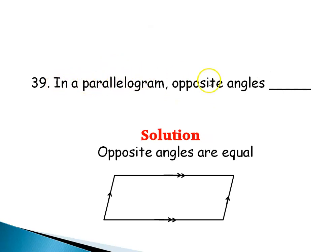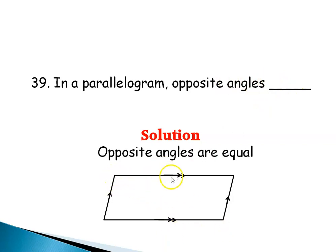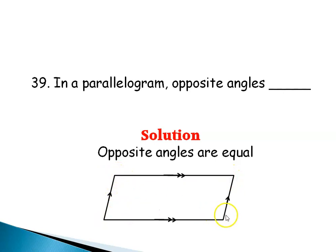Question 39: In a parallelogram, opposite angles are equal. The opposite sides are also equal. So this angle equals its opposite angle, and this angle equals its opposite angle — opposite angles are equal.